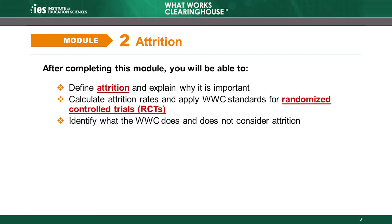This module introduces the concept of attrition, which is the loss of participants from a research study, and explains how the WWC assesses attrition for randomized control trials. The WWC considers attrition an important topic because attrition can change the composition of the research groups and potentially affect the estimated impact of the intervention being tested in the study.